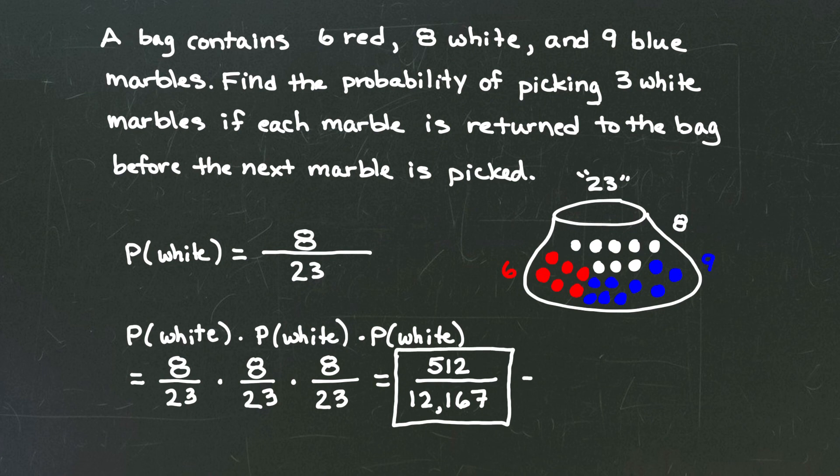If asked to convert to decimal we simply divide 512 divided by 12,167 and that gives us a decimal of 0.04208 or approximately 0.04208.